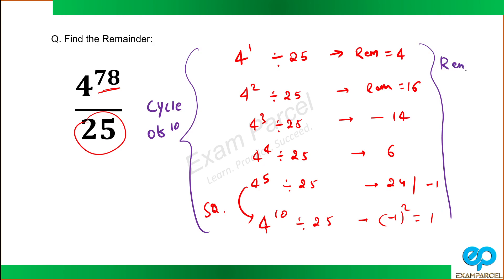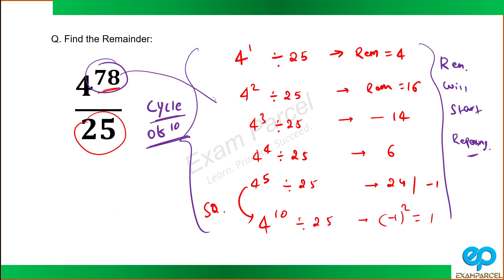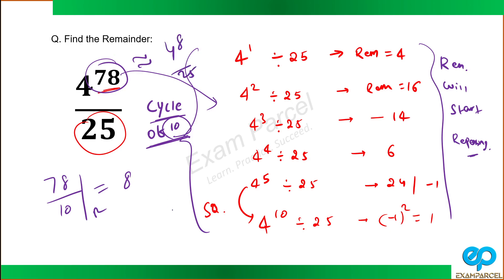So we can say there is a cycle length of 10. In order to find the remainder for the 78th power of 4, we find which part of this cycle 78 belongs to. So 78 divided by the cycle length 10 gives a remainder of 8. This means it is equivalent to finding the remainder of 4 raised power 8 divided by 25.